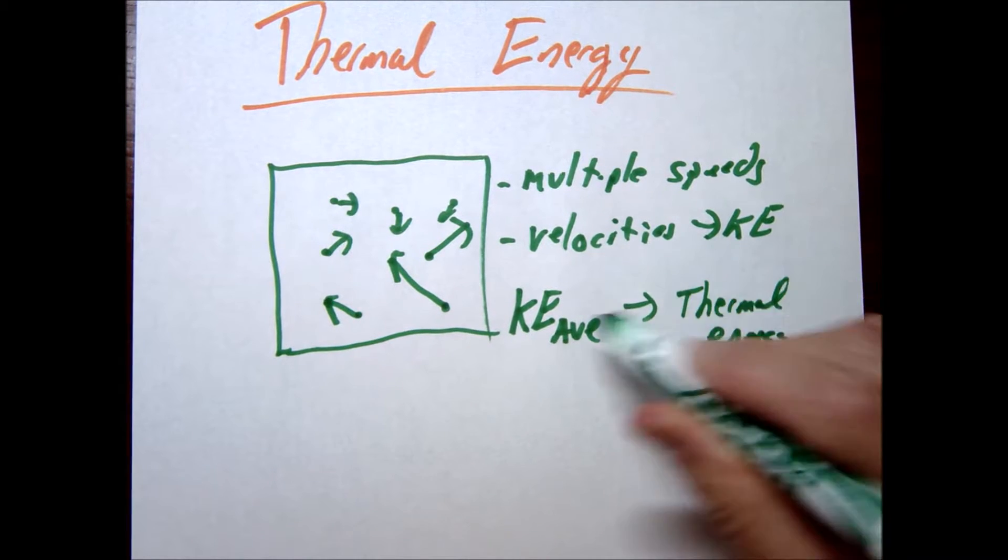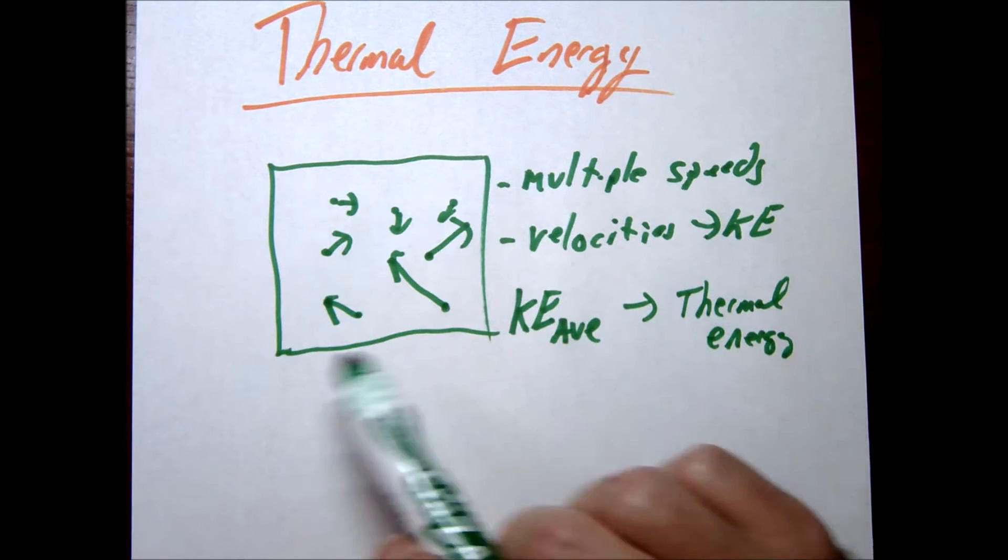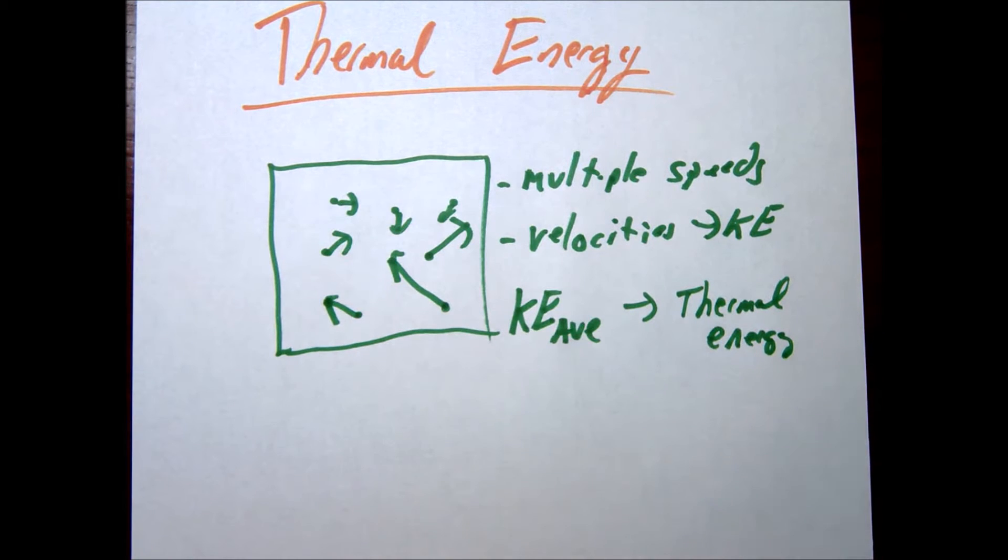So each individual atom has some energy. As a whole if you were to add up all these atoms you would also have some energy as well. And we often talk about temperature. Temperature really is a macroscopic way of measuring these kinetic energies.